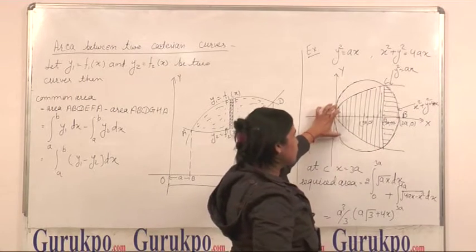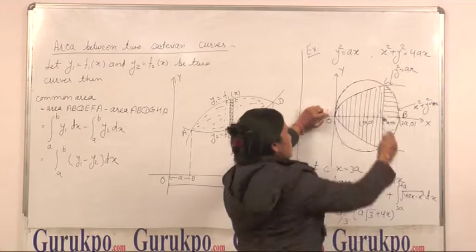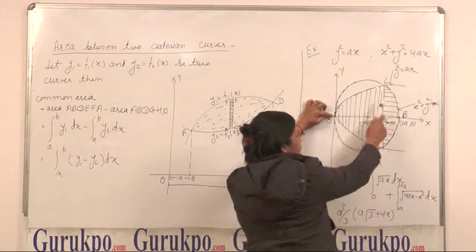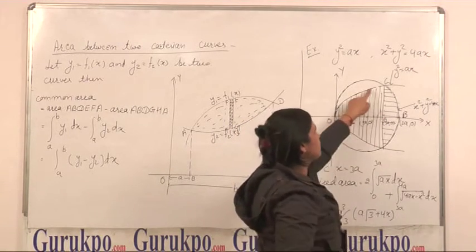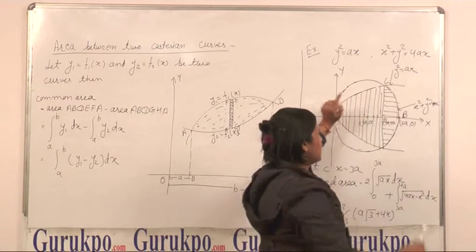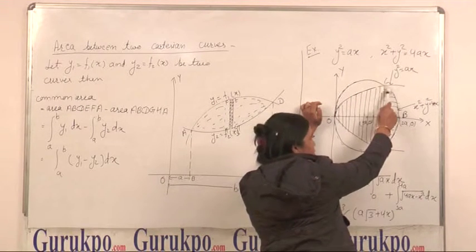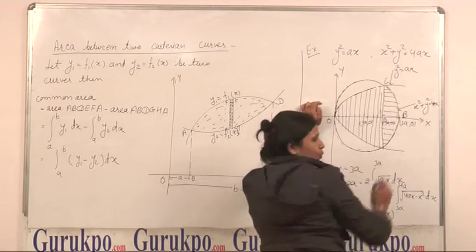But we cannot find it commonly because you can see here that O, A, C, O is with the parabola y square equals Ax and portion C, A, B, C, this is with the circle equation.